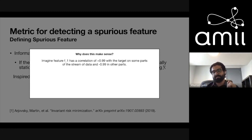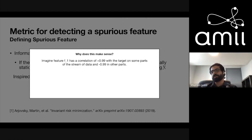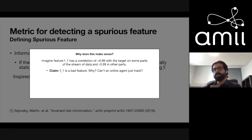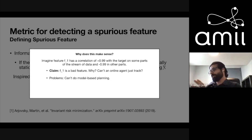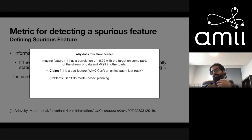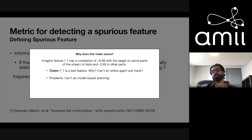Imagine a feature with a correlation of +0.99 with the target on some part of the stream, and the same feature with -0.99 in other parts — it's always strongly correlated, but the sign switches. My claim is that this is a bad feature. You might argue the agent can just track the change in correlation and it's still highly predictive. That's true, but if there's no way of knowing the current correlation — the latent part — you can't do model-based planning on distant parts of the MDP because the correlation is changing.